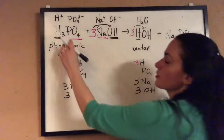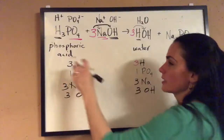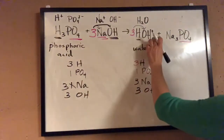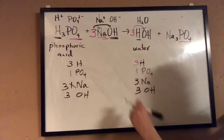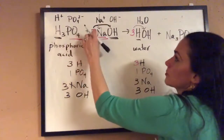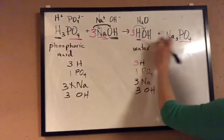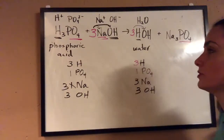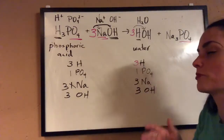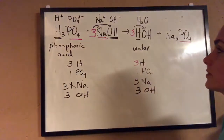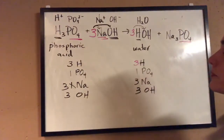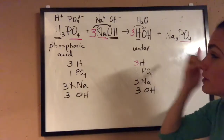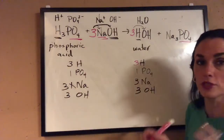If you learned from another chemistry class to split everything up and did well that way, keep it. But a lot of times with double replacement reactions, if you have polyatomic ions, it's easier to keep them as units to balance them.